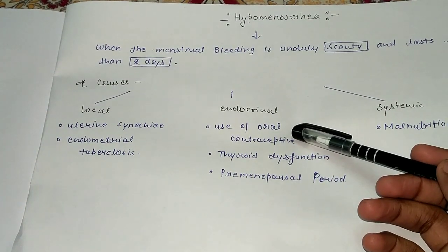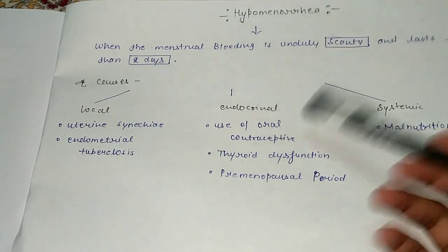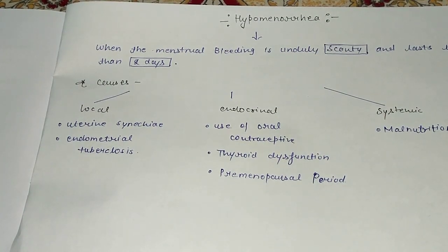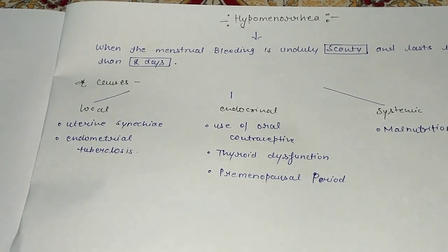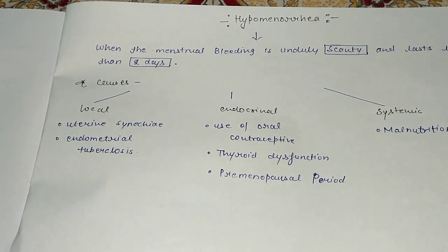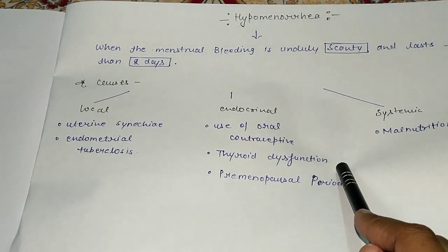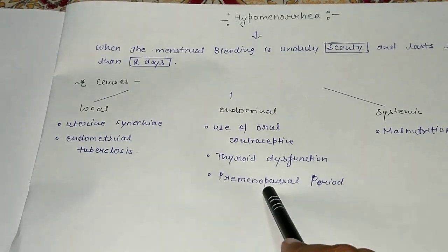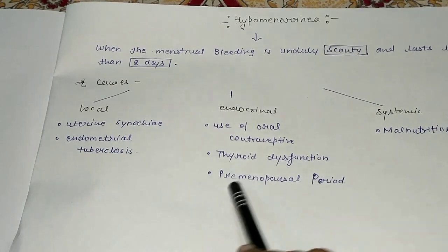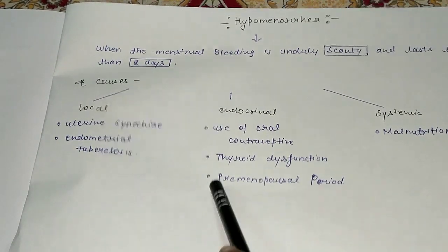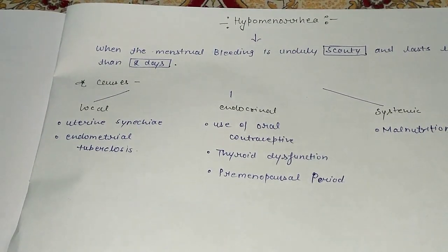Endocrinal causes include use of oral contraceptives — if the patient is using oral contraceptives it is possible to have hypomenorrhea. Another endocrinal cause is thyroid dysfunction. The thyroid gland is very important as it manages the basal metabolic rate and overall body functioning, so thyroid dysfunction can cause hypomenorrhea. The premenopausal period is also an endocrinal cause.